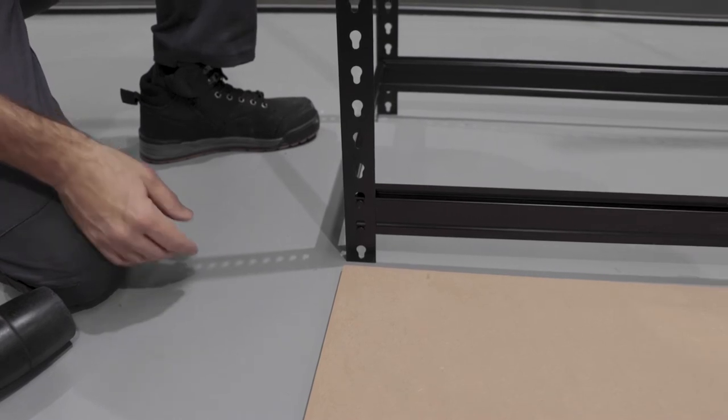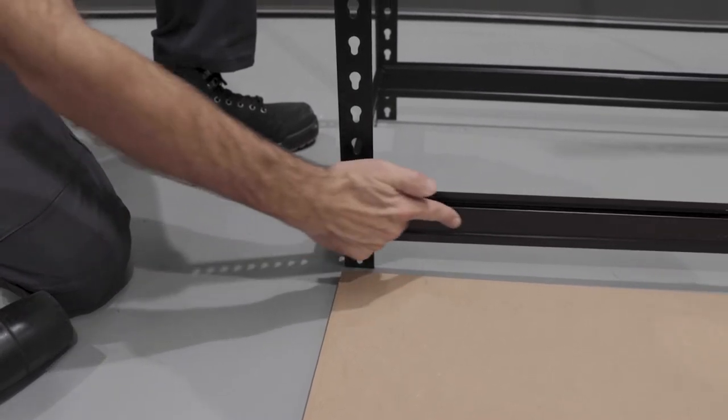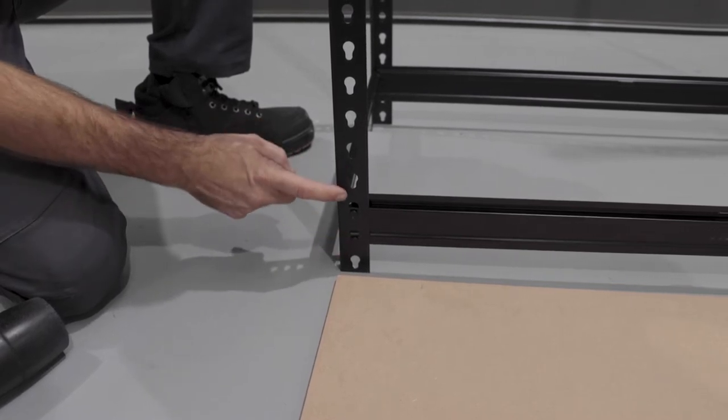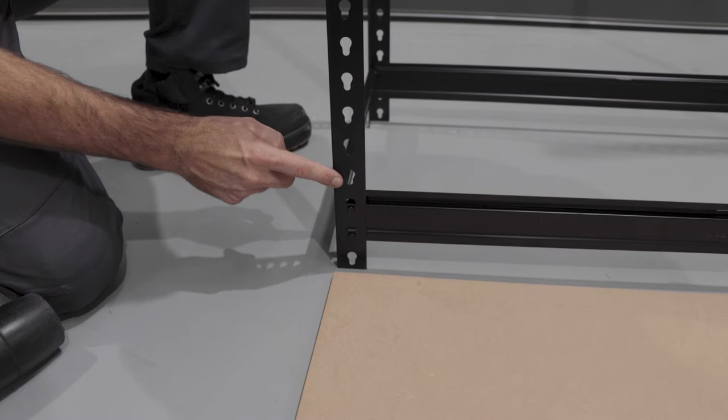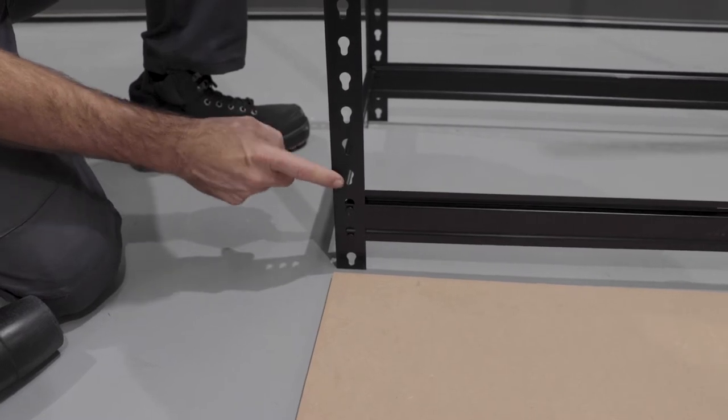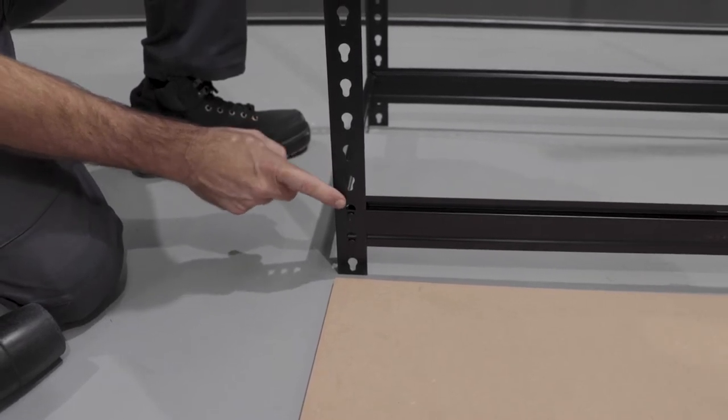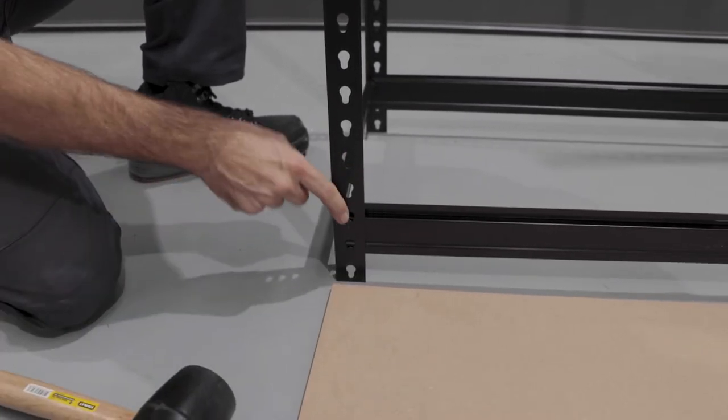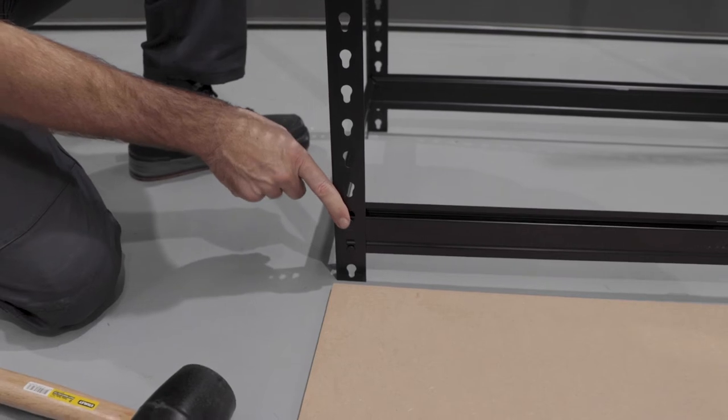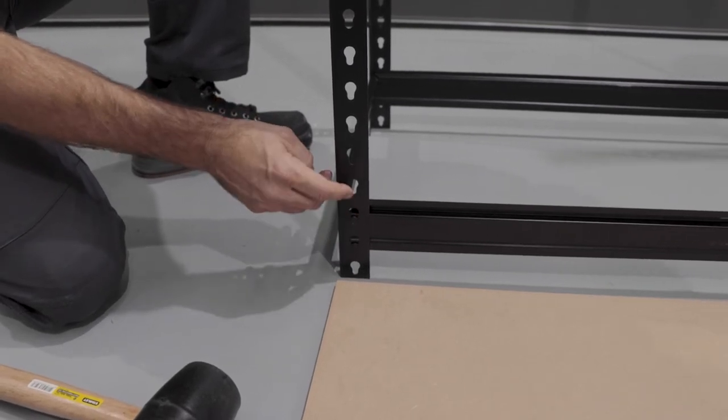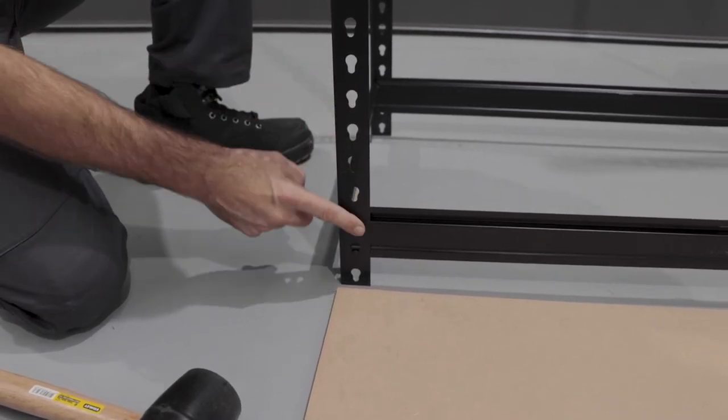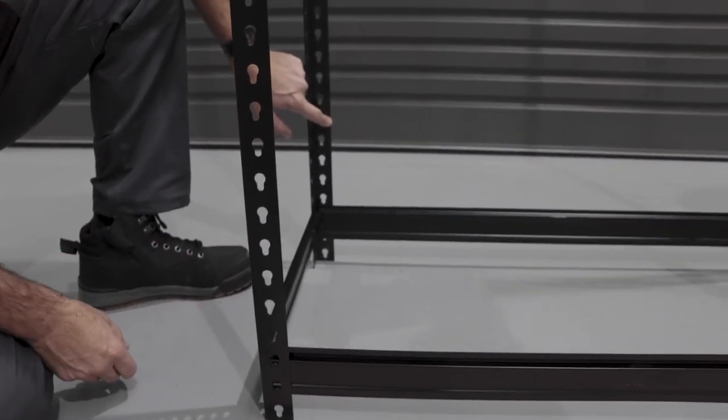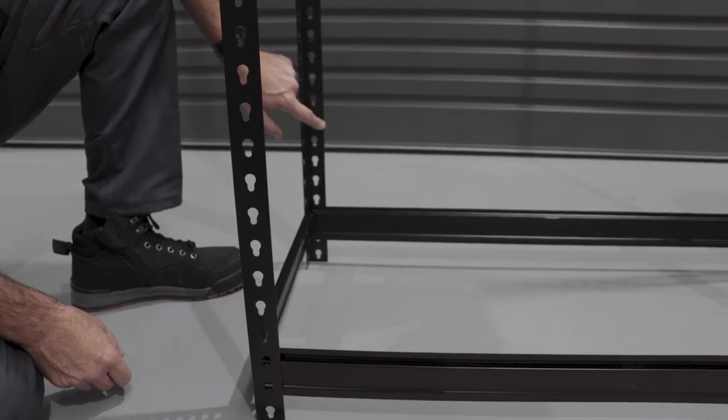So the first step to building your unit is putting in your support arms and we make sure that they're one hole off the ground. You'll also notice the direction of the keyholes. Make sure the small part of the hole is facing the bottom otherwise they won't clip in. Give them a little tap with the mallet and you'll actually feel them click in place if they haven't already. And the other part of the workbench is the front arms are 900mm and the rear arms are 1512mm. They're longer because they hold up the pegboard.